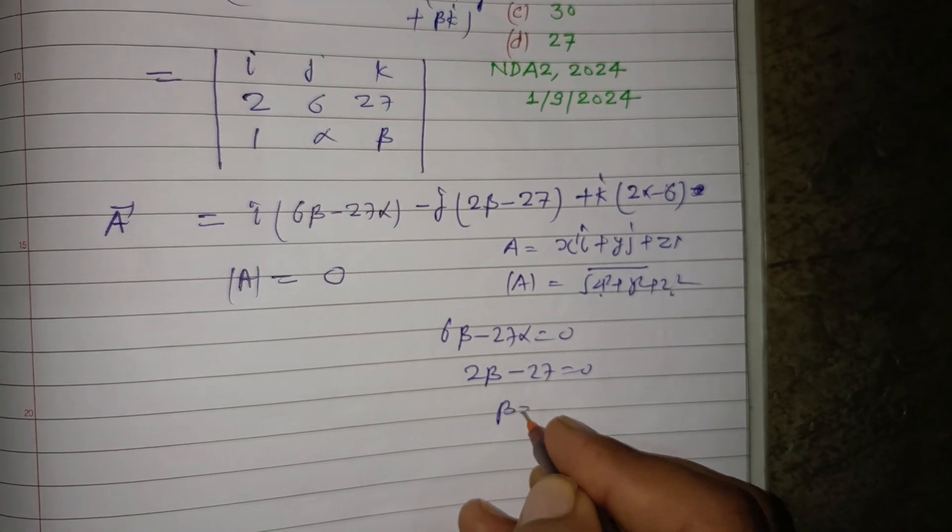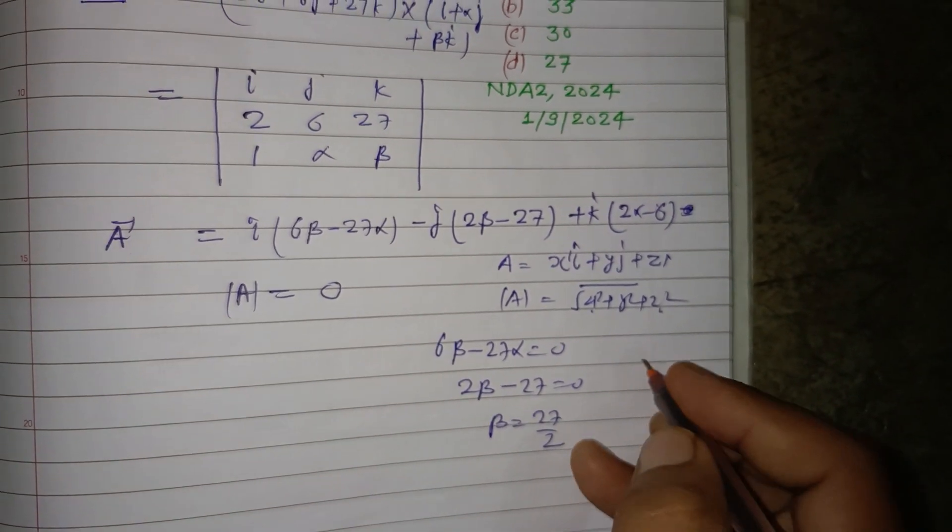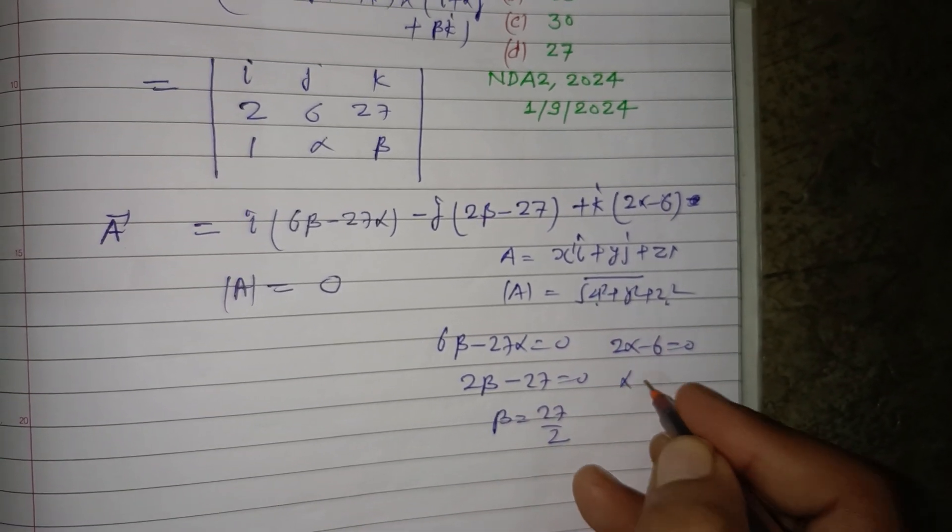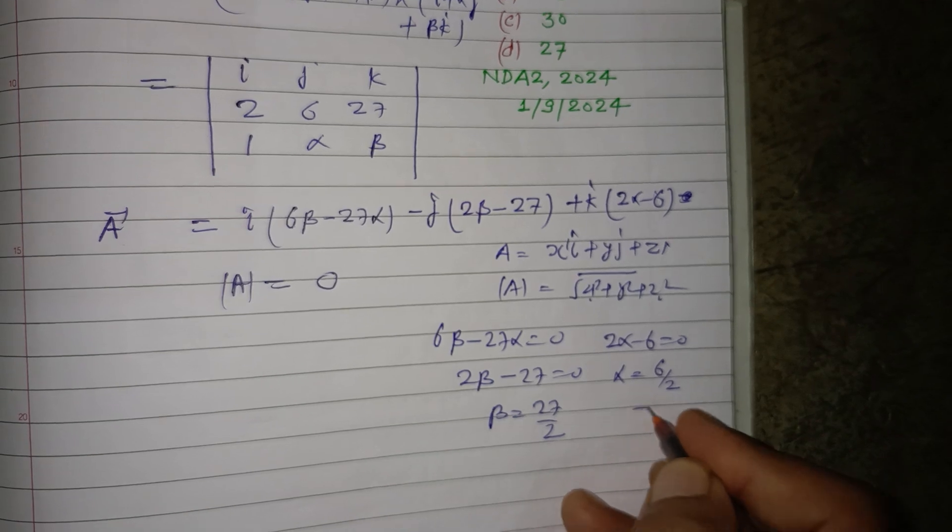So β = 27/2, and from 2α - 6 = 0 we get α = 6/2, that is 3.